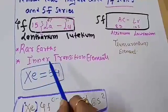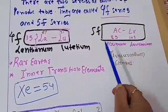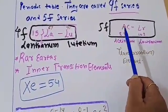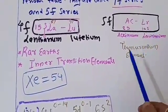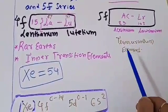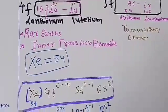They are also known as the inner transition elements. Similarly, the 5F series comprises from actinium to lawrencium, and the elements after uranium are also termed as our transuranium elements.